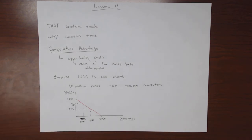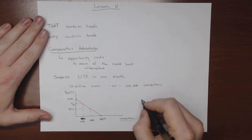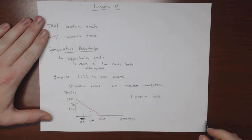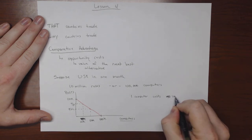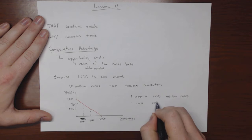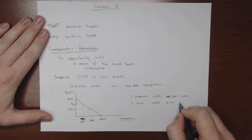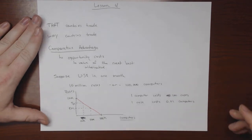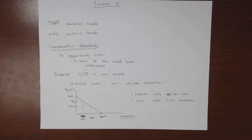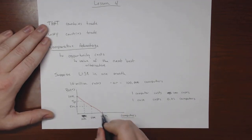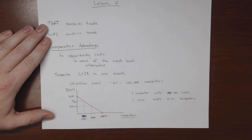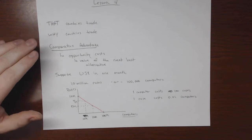We can think about this as saying: one computer costs the US 100 roses, or equivalently, one rose costs 0.01 computers. These statements are equivalent. The slope of the line illustrates the opportunity cost — the slope of this line refers to the opportunity cost of producing roses and computers.